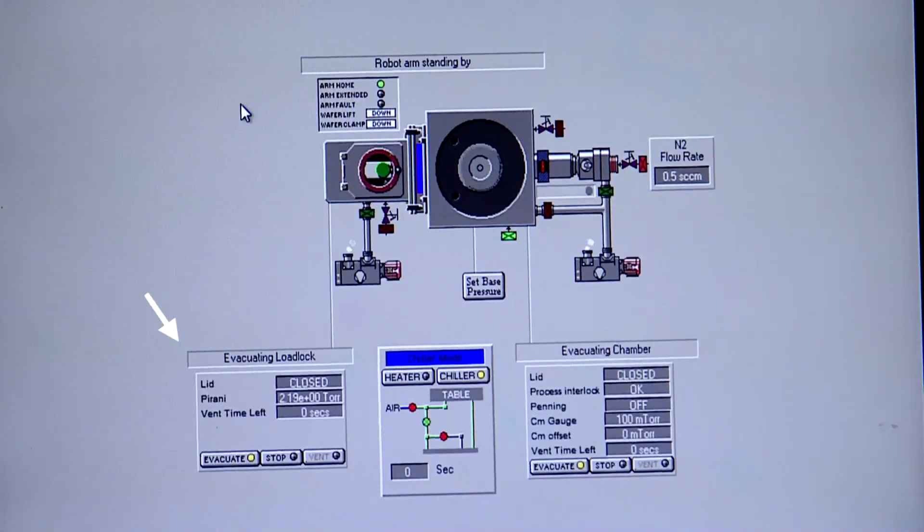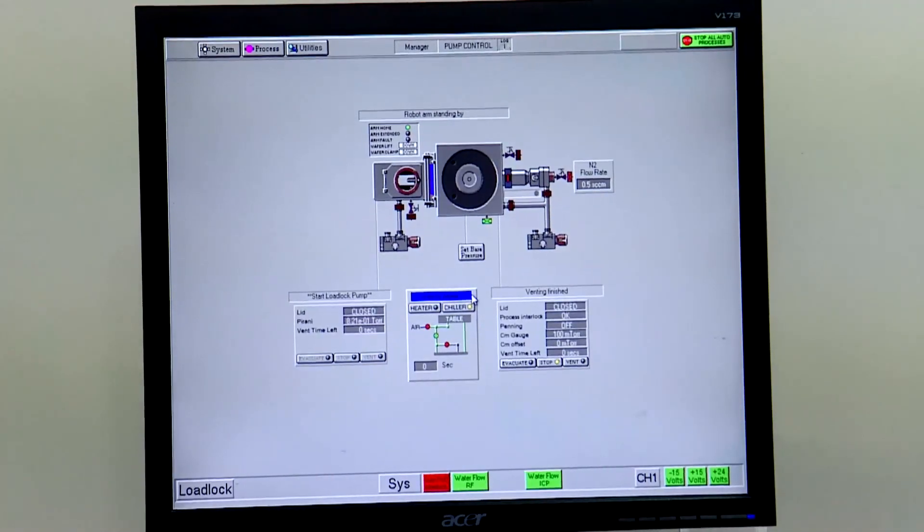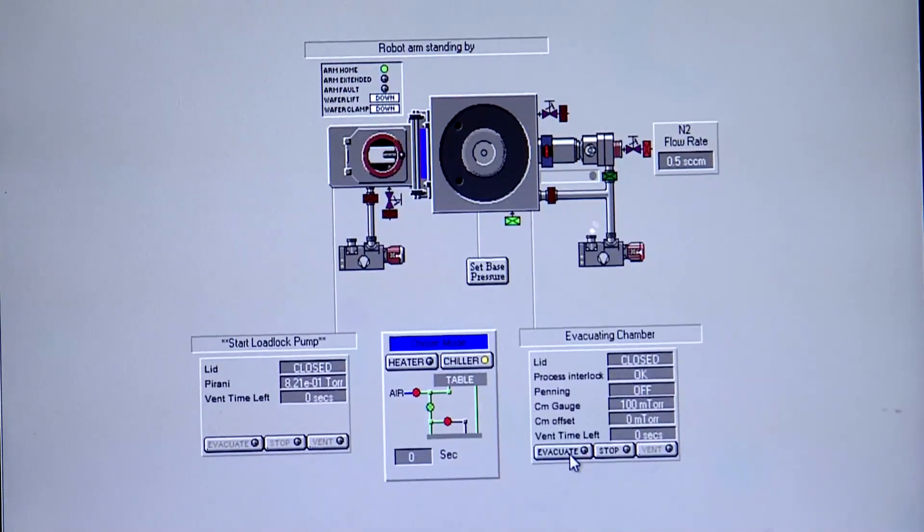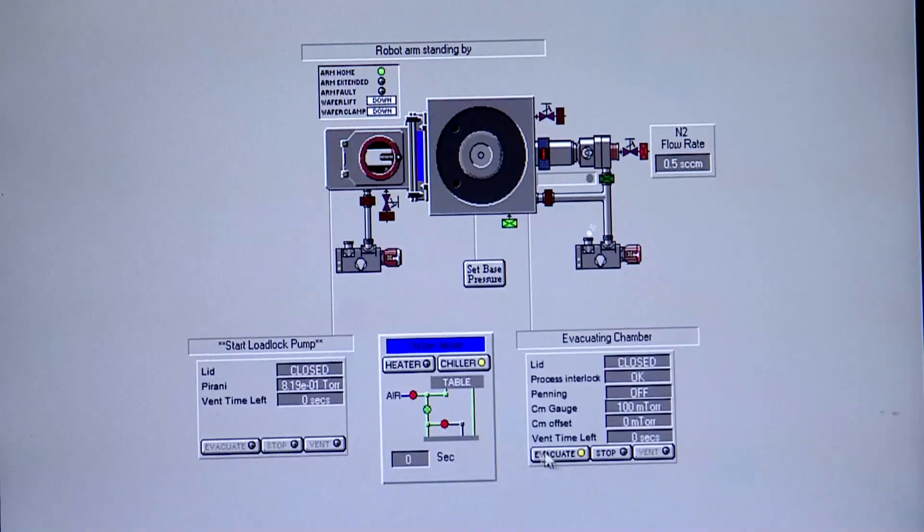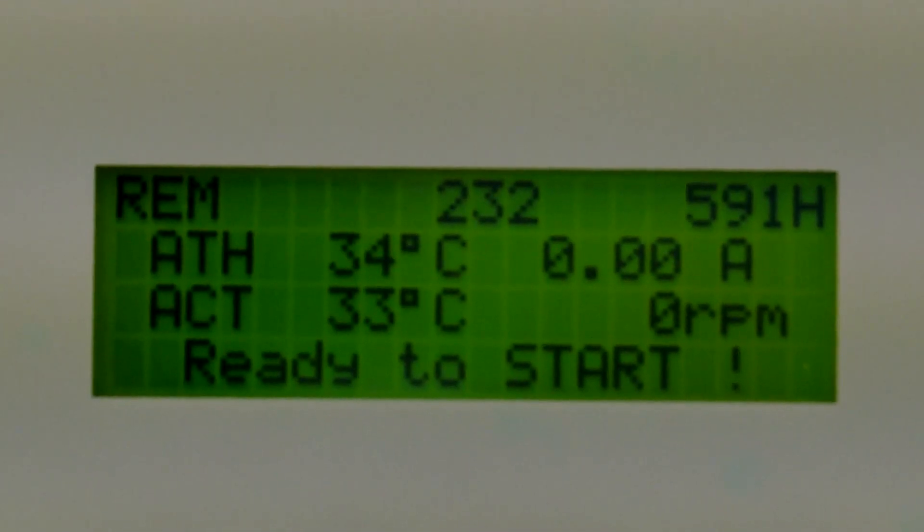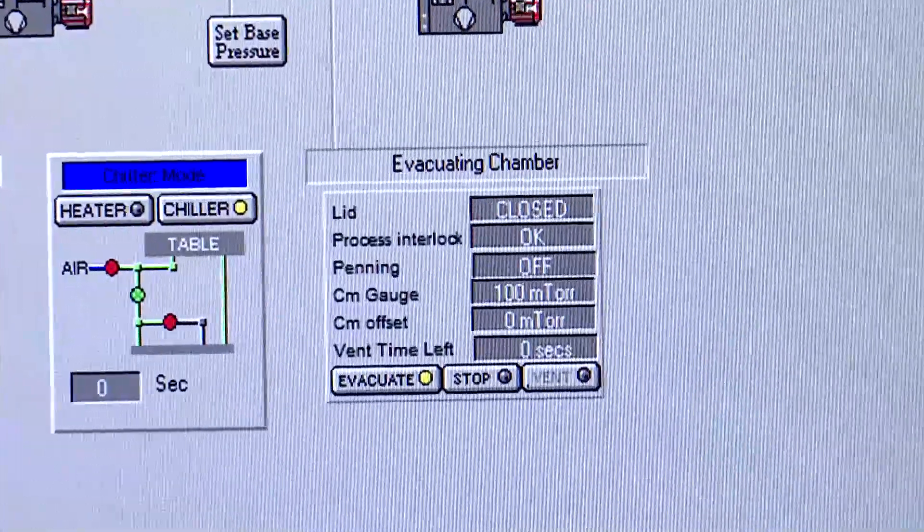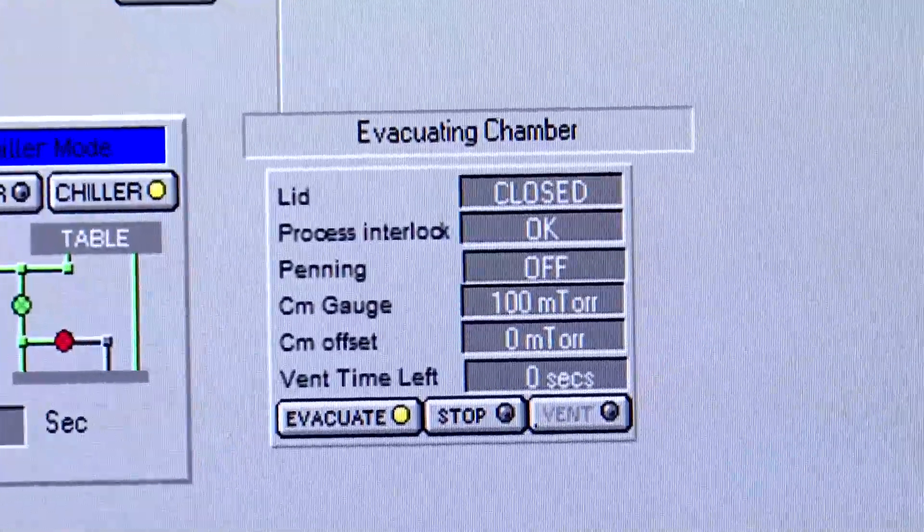Here is the load lock and here is the reactor chamber. First, we will switch on the chiller system, then evacuate the process chamber. Turbo will be automatically turned on and we have to wait for the base pressure to reach around 7.5 into 10 to the power of minus 8 mTorr.